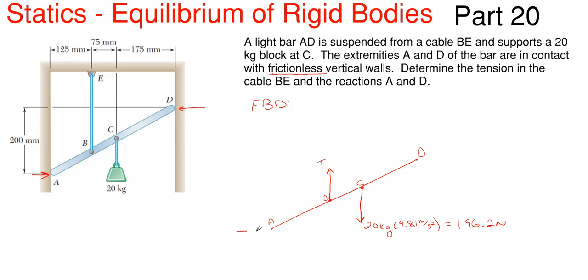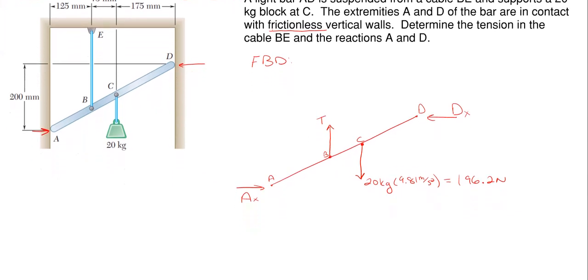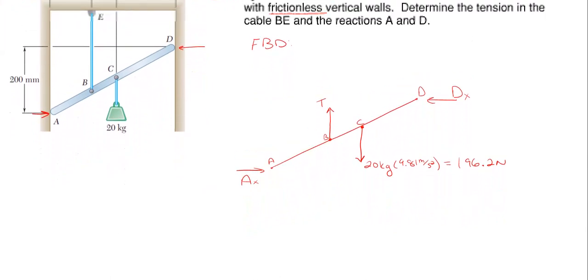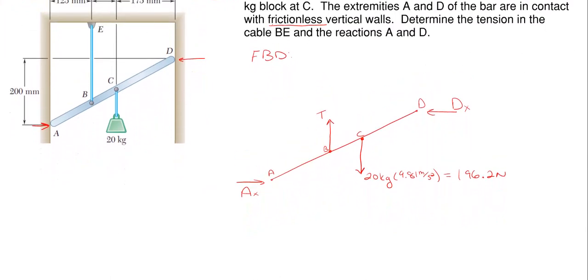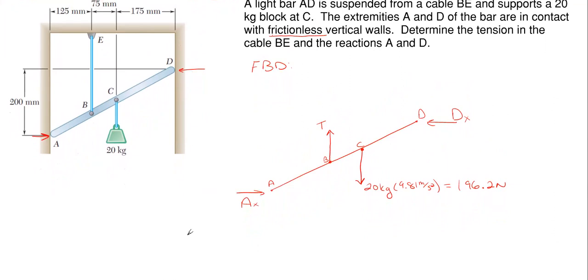Our reactions here would have A_X in this direction and D_X in this direction. We are tasked with finding our tension force T and then D_X and A_X, which are our reactions. We can also have our dimensions here, which I shouldn't scroll too far up because we're going to need those dimensions.